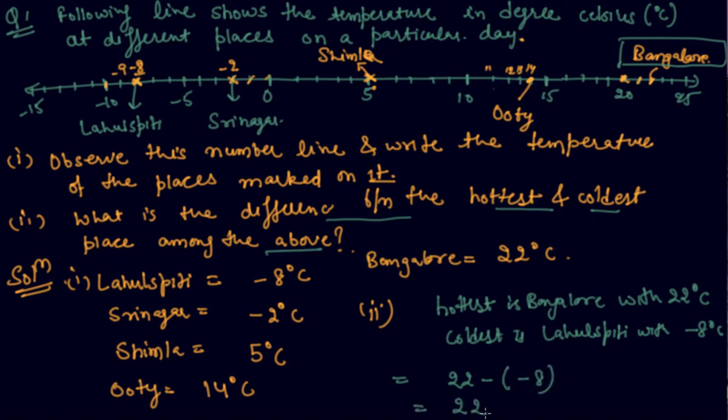And to find out the difference between the hottest and the coldest, we will write 22 minus -8. So it would be 22, and minus minus would be plus. If you see there are two negative signs multiplying each other, then it would become positive. So 22 plus 8 would be 30 degrees Celsius. So the difference between the hottest and the coldest is 30 degrees Celsius.